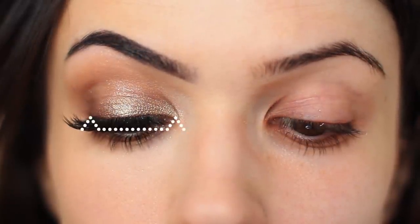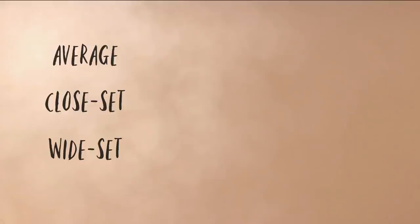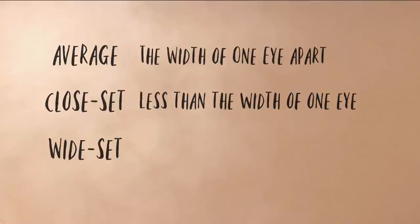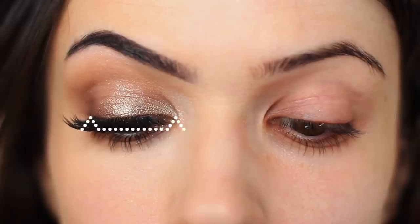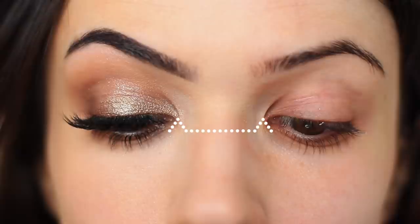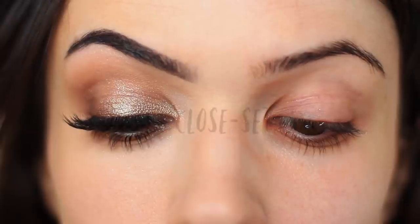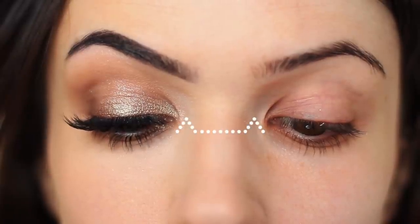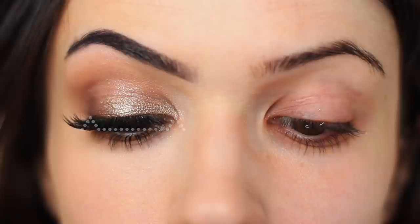In our previous video we talked about finding your eye spacing and figuring out which of the three categories you fit into: average, close, or wide set — referring to the distance between the eyes. The average spacing is the width of one eye length apart. Less than that is close set; more than that is wide set. We measured one eye using our thumb and index finger and placed that measurement in the middle to see where it landed. If you were poking yourself in the eye, you likely have close-set eyes. If you had room on either side, you likely have wide-set eyes. If it fits snugly in the middle, you have average eye spacing.